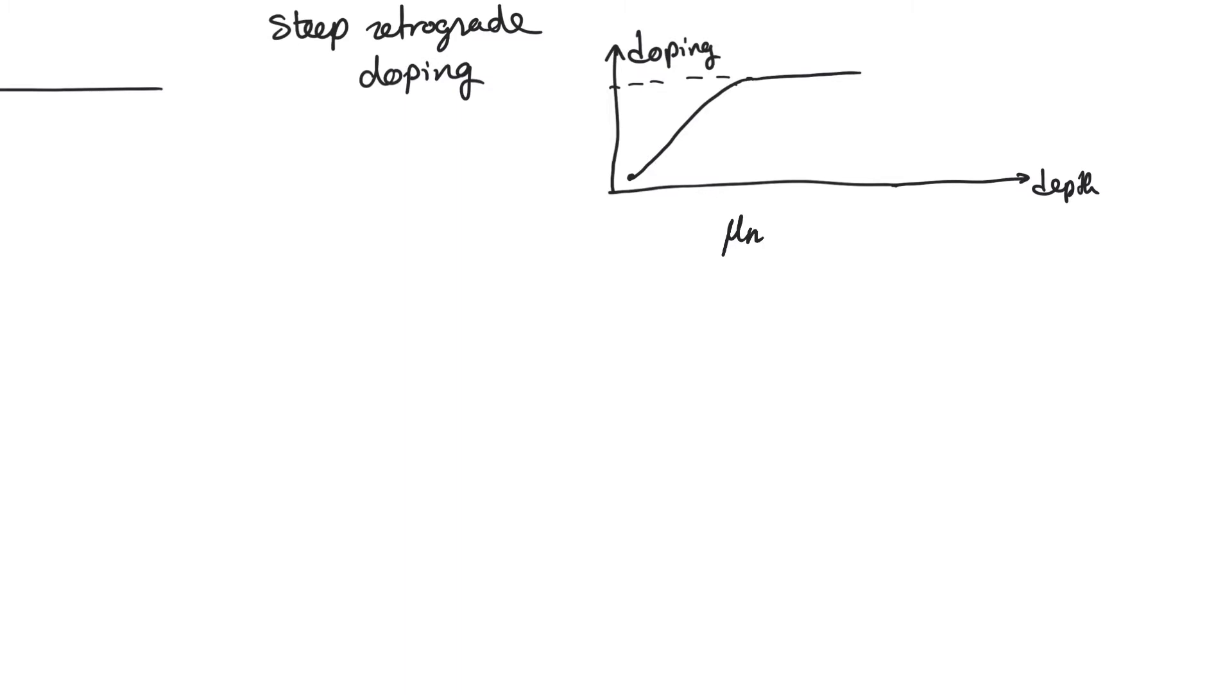We cannot, however, tolerate light doping deep in the body because this could exacerbate a lot of effects, not the least of which is latch-up. One problem with latch-up is when well and substrate resistance is high, and one way to combat this is to reduce these resistances. So we should keep doping heavy deeper in the body.